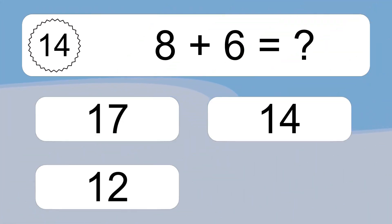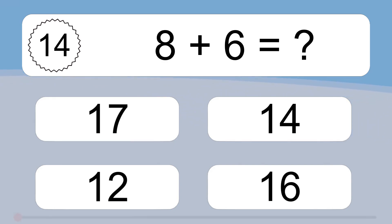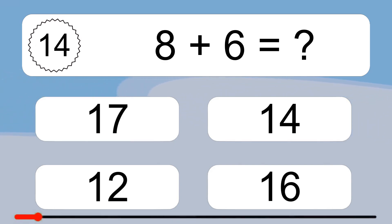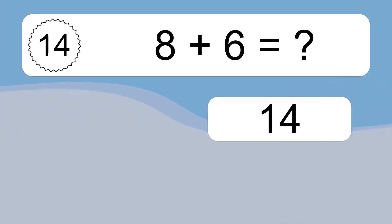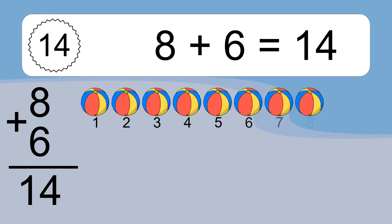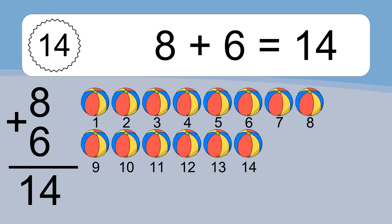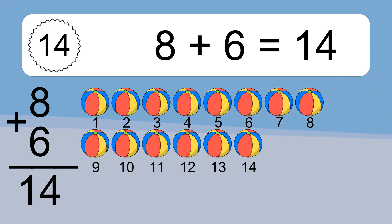Eight plus six equals what? Eight plus six equals fourteen. Let's count it: one, two, three, four, five, six, seven, eight, nine, ten, eleven, twelve, thirteen, fourteen.